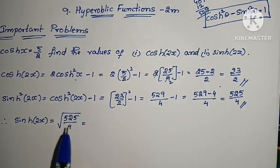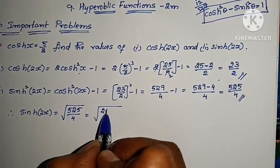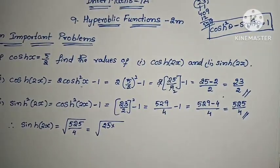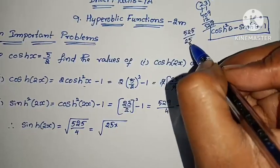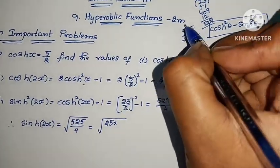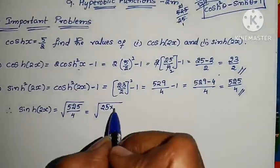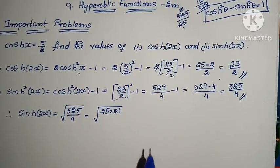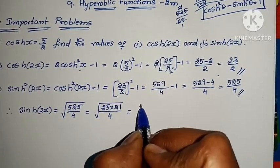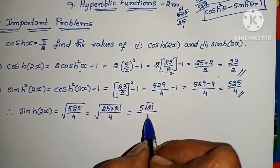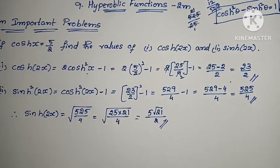525 = 25 × 21. So √(525/4) = √(25 × 21)/2 = 5√21/2. Therefore sinh(2x) = 5√21/2. The problem is complete — very simple.